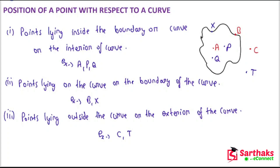What is called a region? The interior of the curve together with the boundary — that is, the points lying inside the curve and the points lying on the boundary of the curve — are together called the region. So this was all about the position of a point with respect to curve.